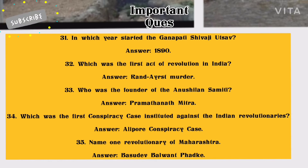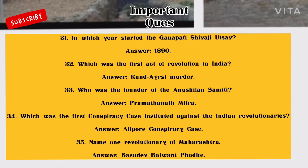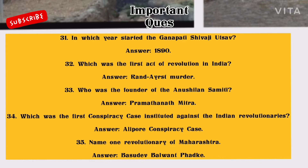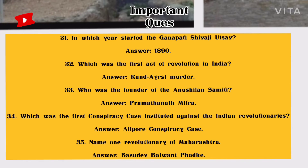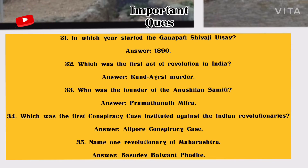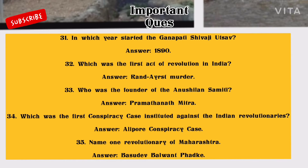Number 30: Where was Abhinav Bharat founded? Answer: Maharashtra. Number 31: In which year did the Ganapati-Shivaji festival start? Answer: 1890. Number 32: Which was the first act of revolution in India? Answer: Kand Astra murder. Number 33: Who was the founder of Anushilan Samiti? Answer: Ramathanath Mitra. Number 34: Which was the first conspiracy case instituted against Indian revolutionaries? Answer: Alipur Conspiracy Case.